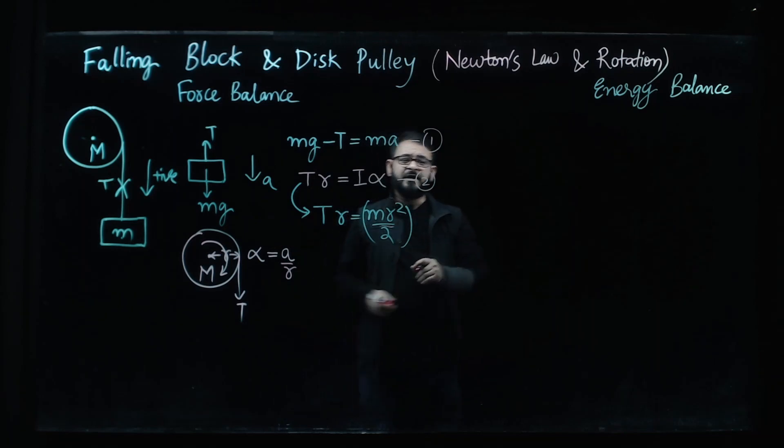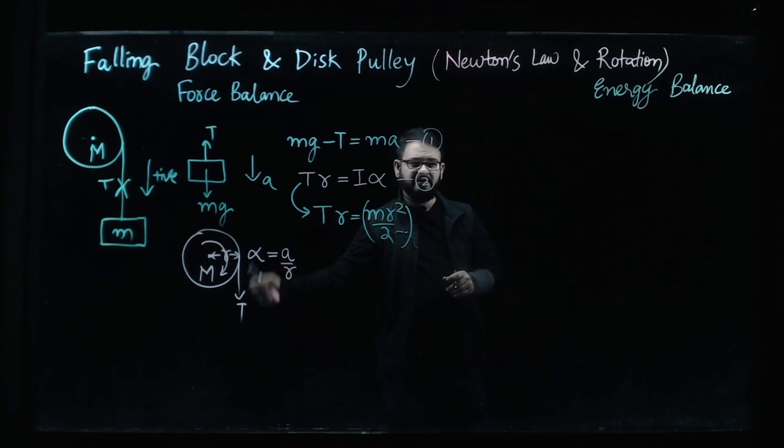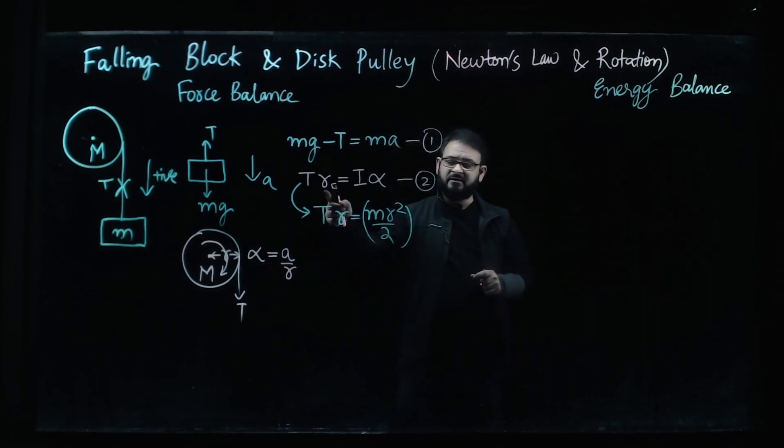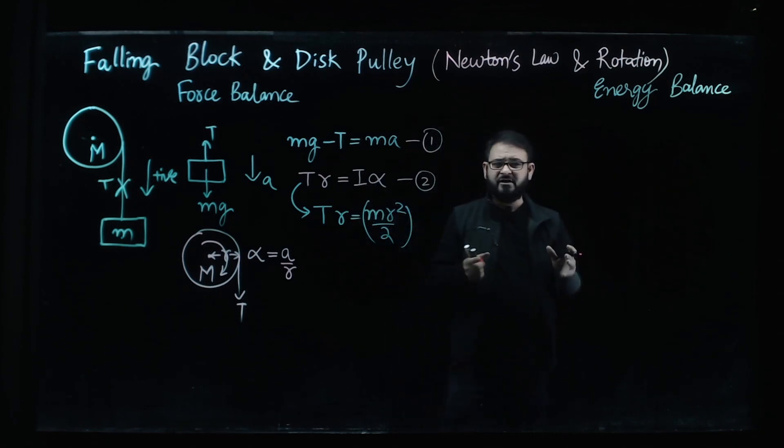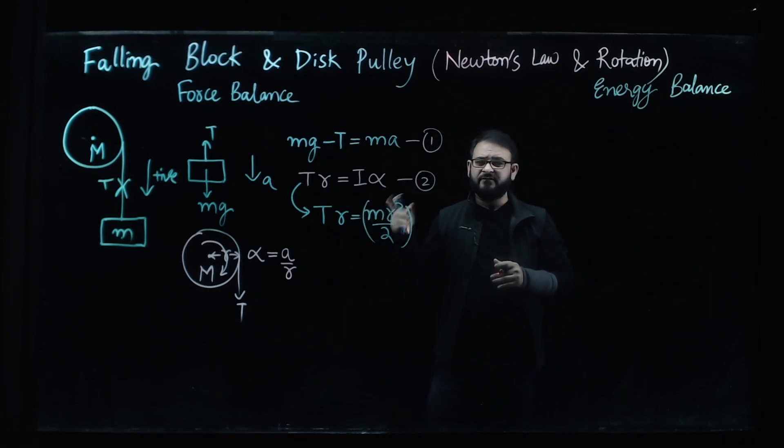Alright so the equation for the rotation of this disc can be written as torque. The torque is the tension which is applied downwards times the perpendicular arm that is R is equal to I alpha. Now I is the moment of inertia and it is responsible for the inertia of rotation.